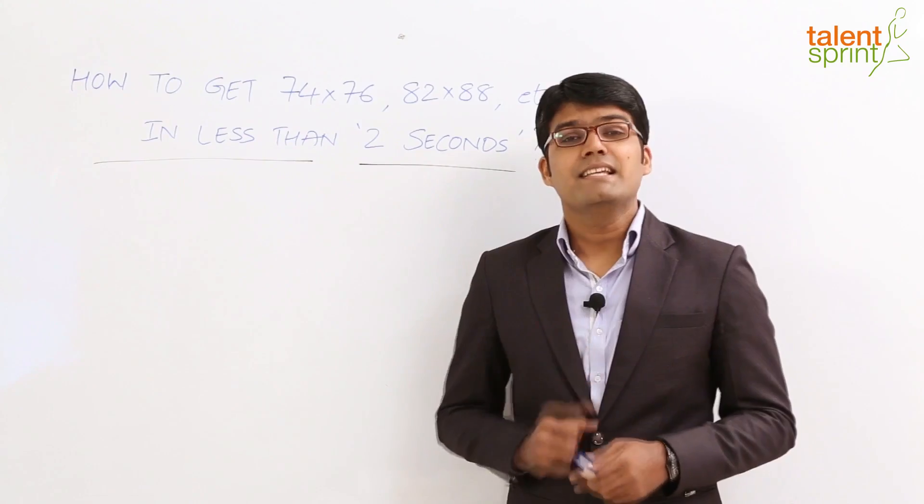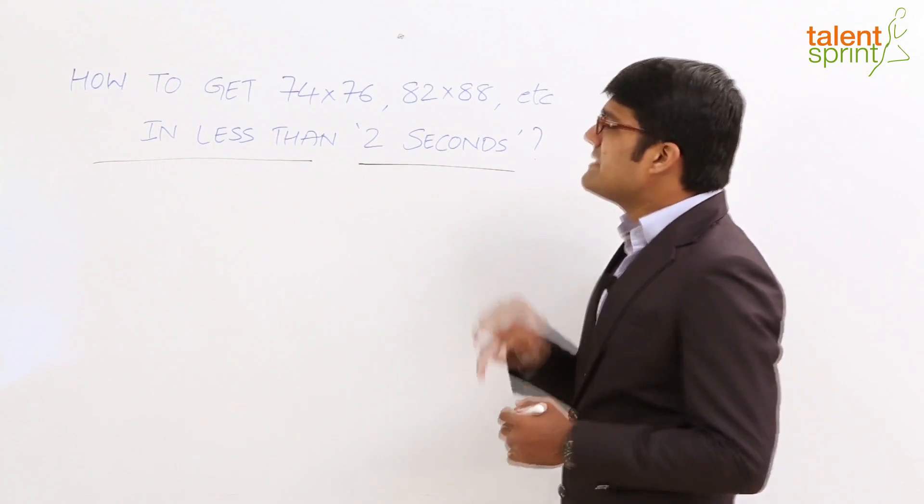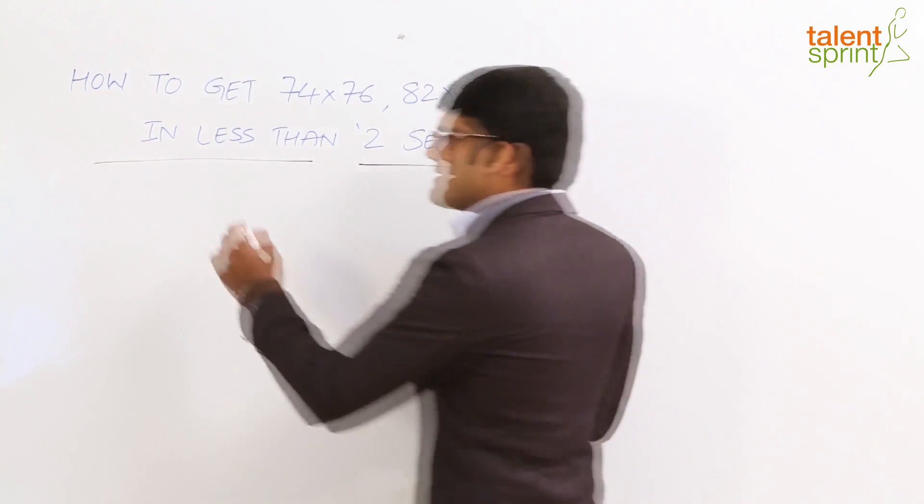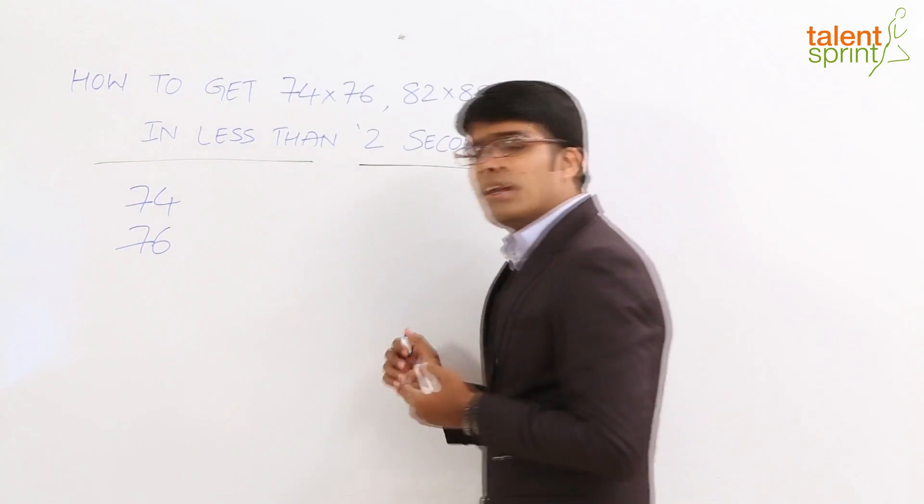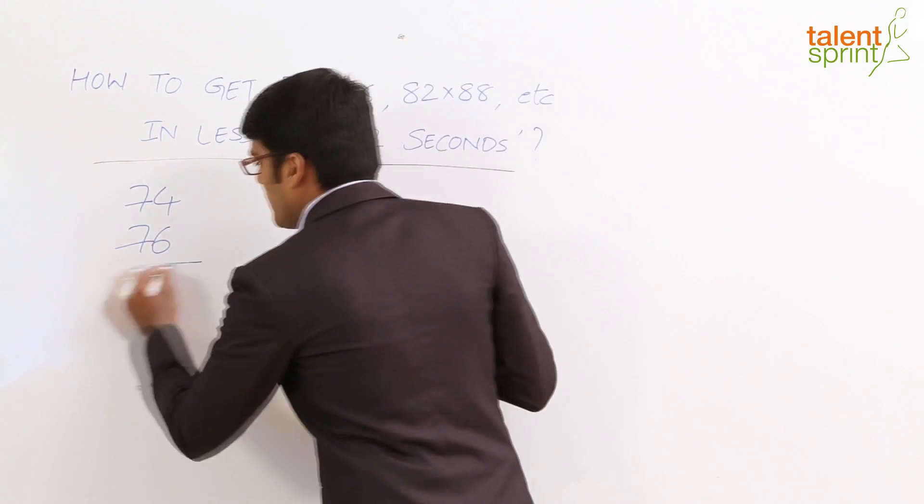Let us see how do we do this. Let us consider 74 into 76. We need to multiply these two numbers, 74 and 76. Now going by the traditional method, what do we do?